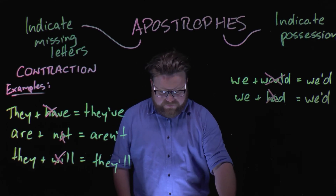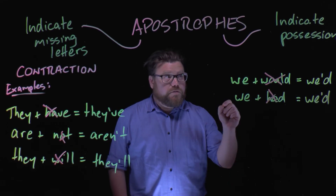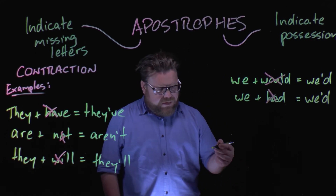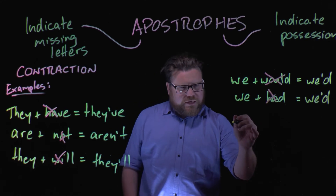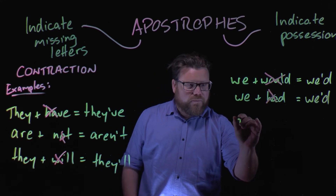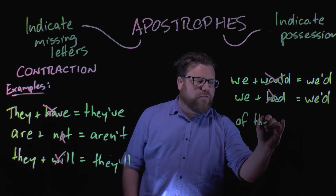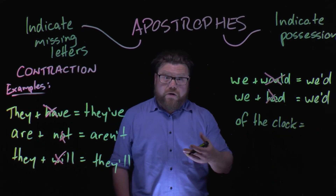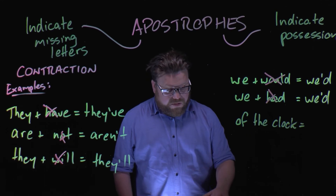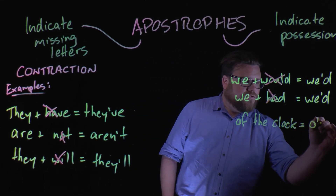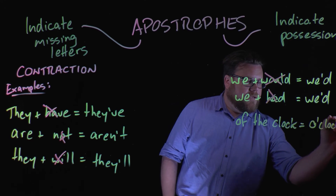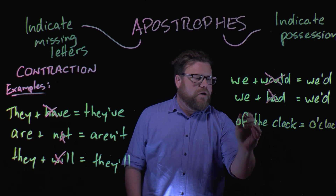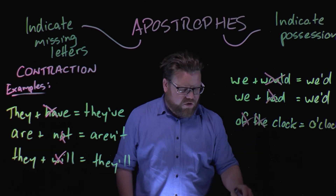These are all contractions where we've used an apostrophe to cut out some letters. One other one, just before we move on, is the expression we don't use anymore: 'of the clock.' It used to be that you would say 'the 7th hour of the clock.' Of course, we would say '7 o'clock,' and that contraction sees us cut out all the way from the O through 'the clock' — 7 o'clock.